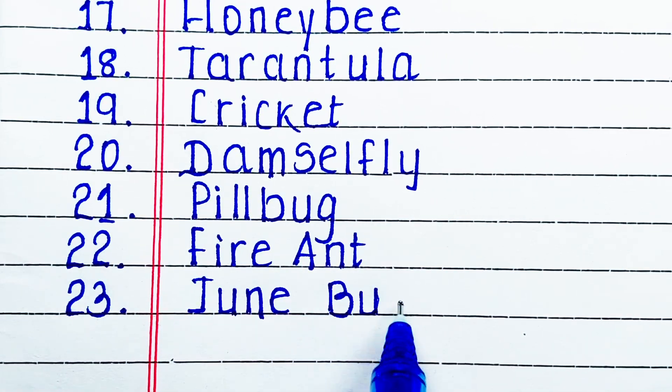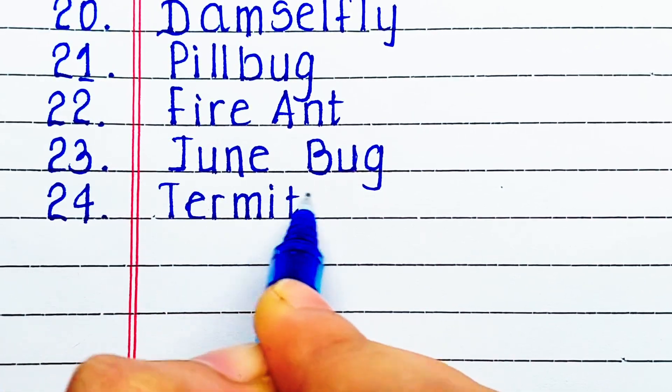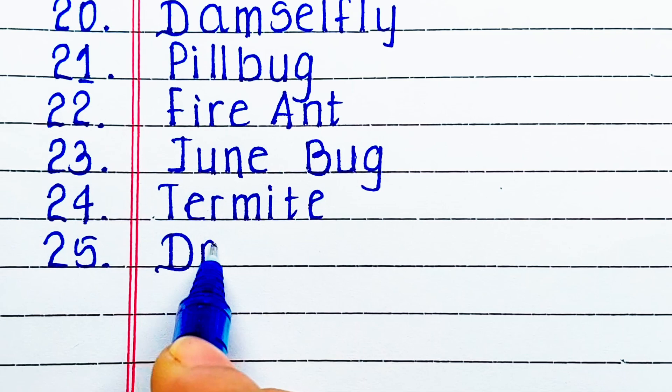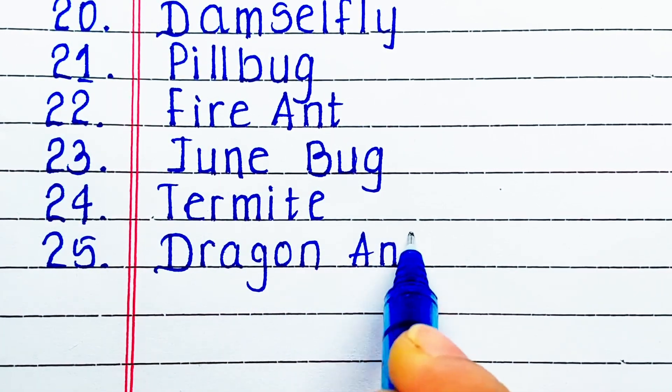Next F-I-R-E-A-N-T, fire ant. Next J-U-N-E-B-U-G, June bug. Next up we have T-E-R-M-I-T-E, termite. Next D-R-A-G-O-N-A-N-T, dragon ant.